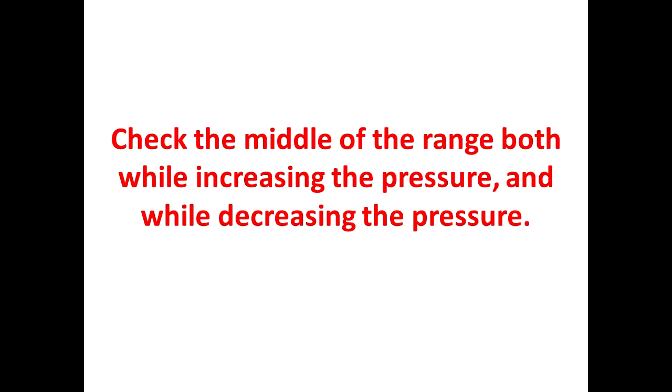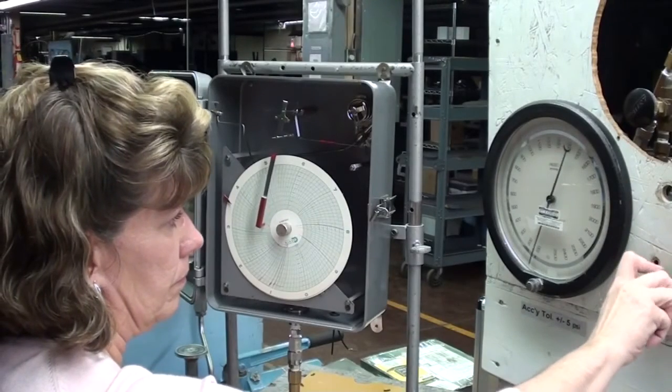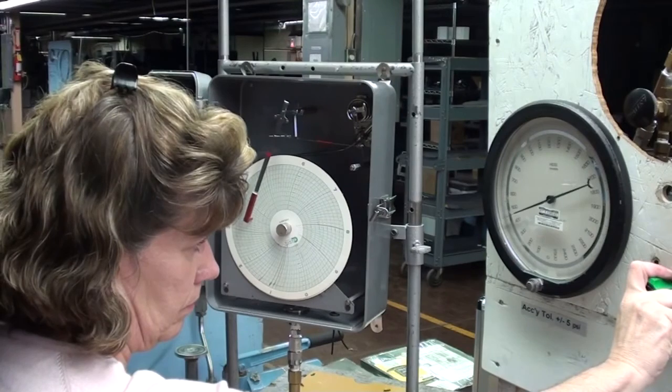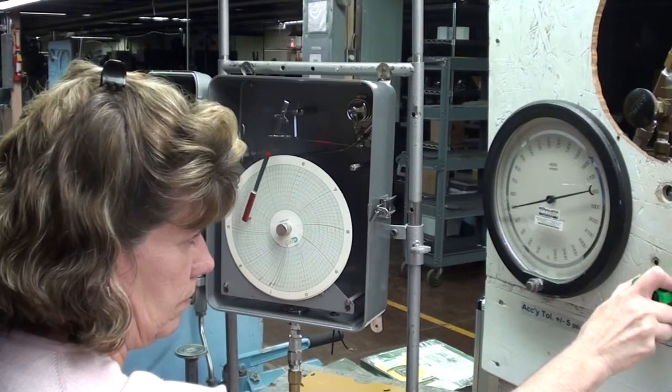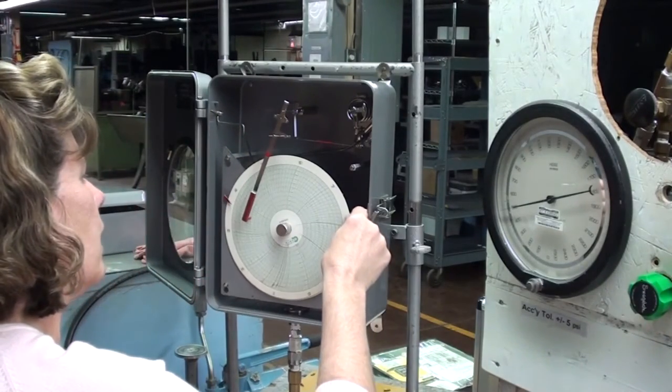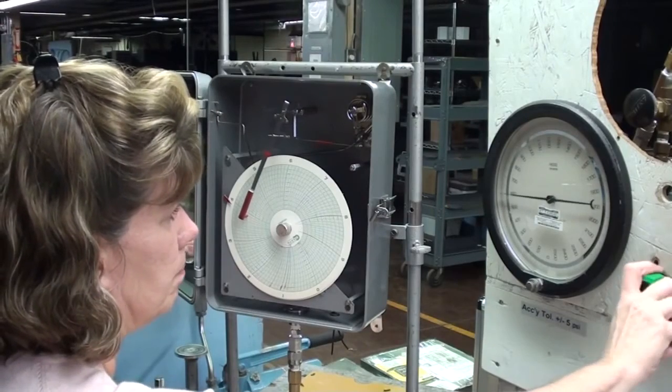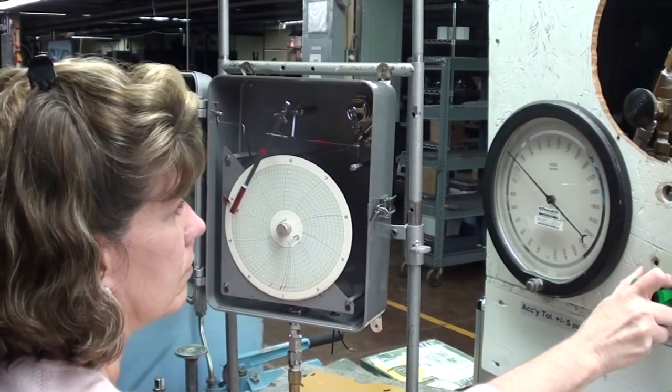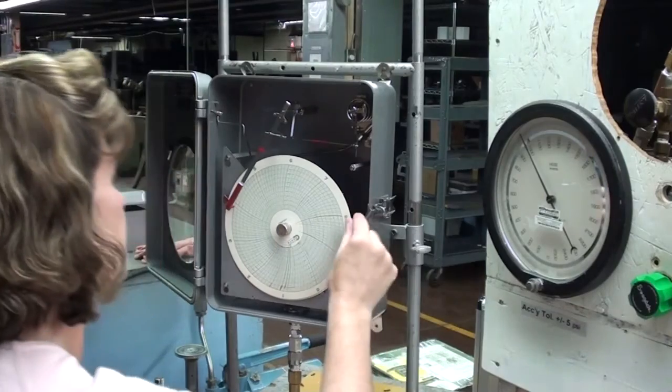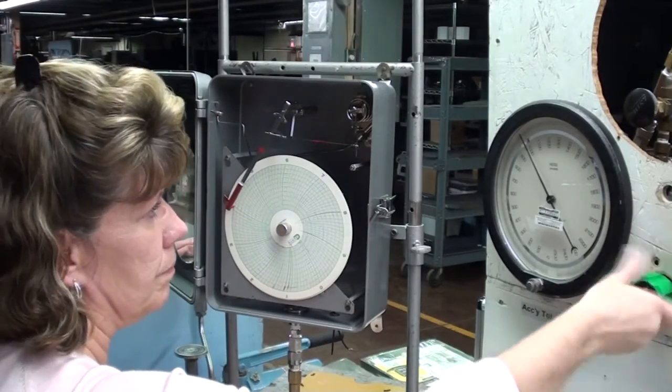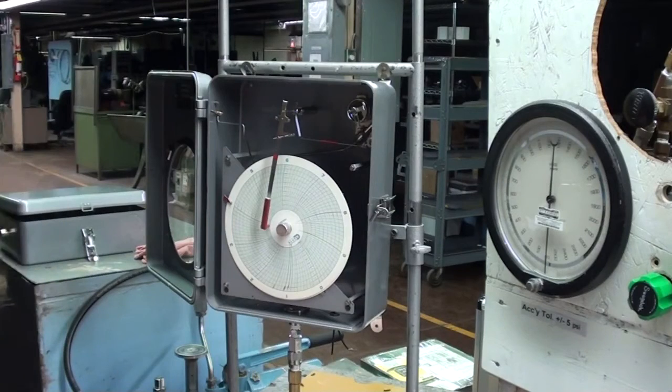So, I was at the bottom, top, and I did the middle coming down. So, now I'm going to do the middle going up. Okay. There's 500 psi going up. Let's just go on to 1,000, double check our top. Okay. That's the calibration of our recorder.